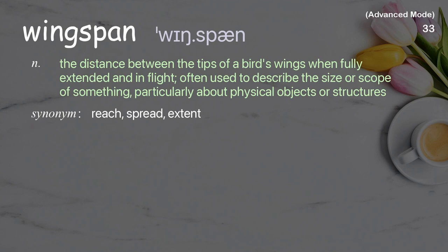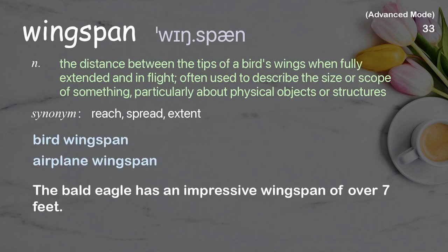Wingspan: The distance between the tips of a bird's wings when fully extended and in flight, often used to describe the size or scope of something, particularly regarding physical objects or structures. Examples: bird wingspan, airplane wingspan. The bald eagle has an impressive wingspan of over 7 feet.